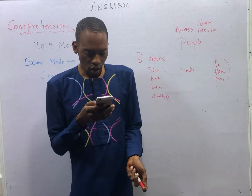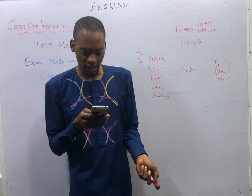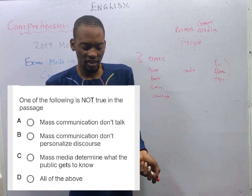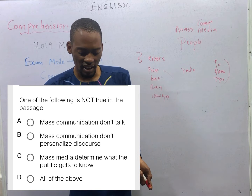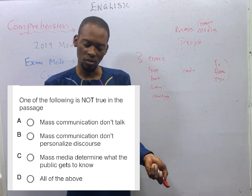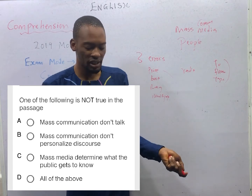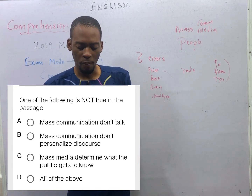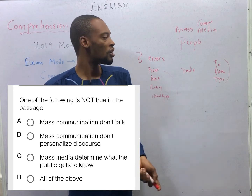Next: one of the following is not true in the passage. Mass media don't personalize discourse, and mass media determines what the public gets to know — yes, both are true. Which of the following is not true? Mass communications don't talk — that is not true. They do talk.